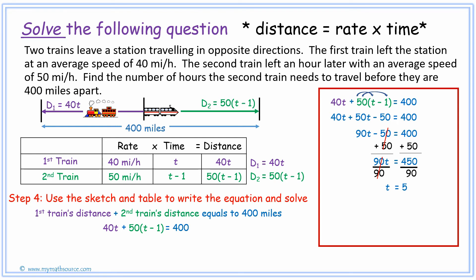Now be careful—many people get excited, they're finished and they think that's the answer. But remember, t represents the first train's time, which means we still need to find the second train because that's what the question asks us to do. To find the second train, remember the second train's time was given by t subtract 1, and since t equals 5, well that becomes 5 subtract 1, and 5 subtract 1 is simply 4 hours. That means our final answer for this question is simply the second train needs to travel for 4 hours before they are 400 miles apart.